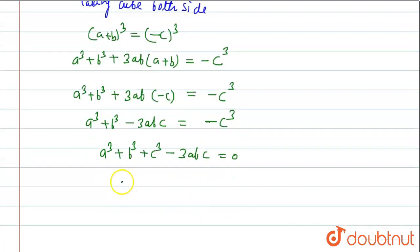Now 3abc moves to right side. a³ + b³ + c³ = 3abc. This is our answer.